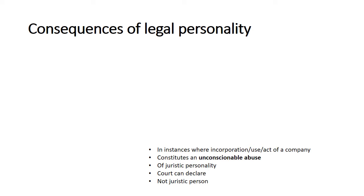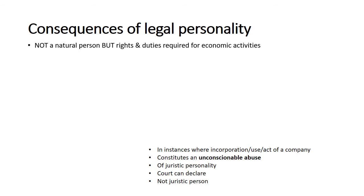Different to a partnership which does not constitute a separate legal entity, companies are forms of business enterprises that provide for the company assuming its own legal personality, separate from its members, and that is also one of the advantages of a company. We must make sure that we do not confuse the legal personality or entity of a company with that of a natural person, because a company cannot perform certain inherently human acts — for example, drafting a will. But since it is primarily a business entity, it can acquire rights and duties that are required for specific economic activity.